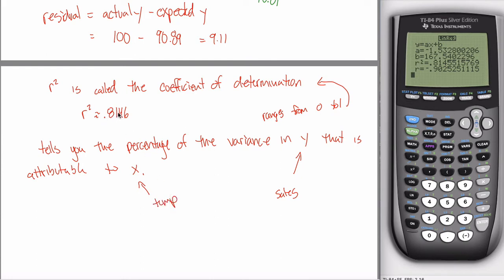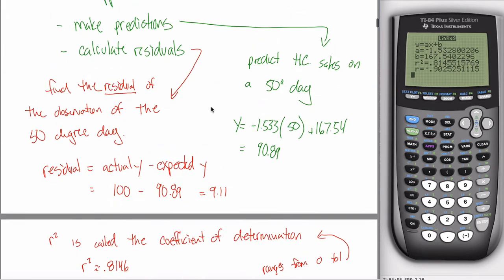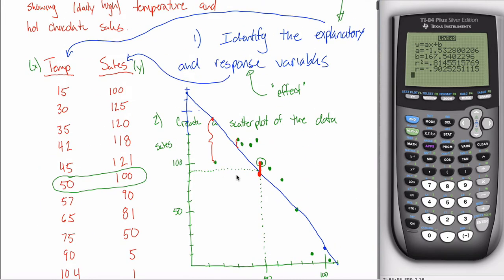If r-squared is really close to 1, then almost all of the variance in Y is attributable to X. For example, if r-squared was 0.99, we're saying 99% of the variance in Y is attributable to X. But if r-squared is really small, like 0.15, then only 15% of the variance in Y is attributable to X, so other factors need to be taken into account. If most of the variance in Y is attributable to X, my line is going to fit the data really well.